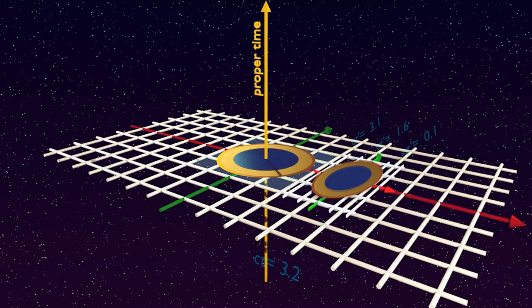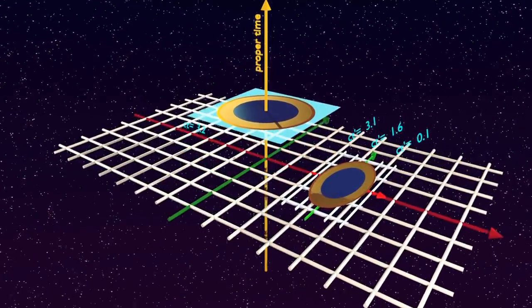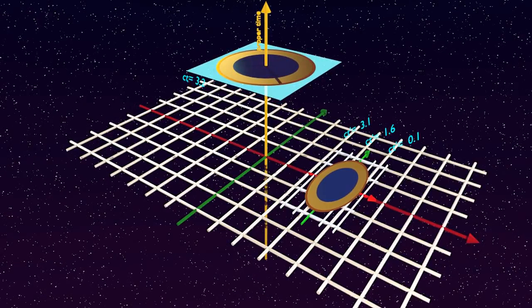The stationary lab is simply displaced along the proper time axis, since all its points have the same proper time equal to the time of the stationary frame.